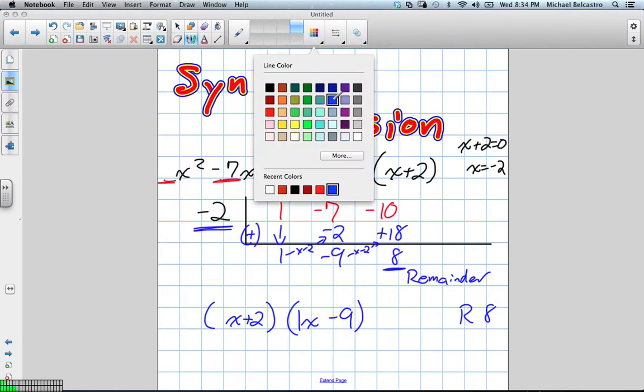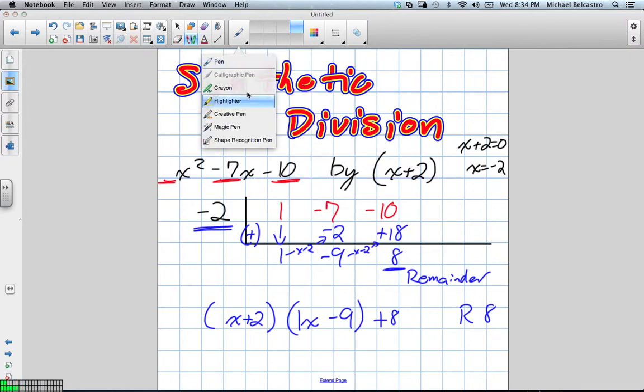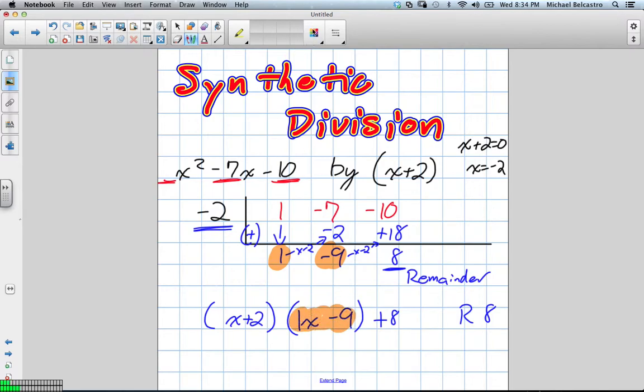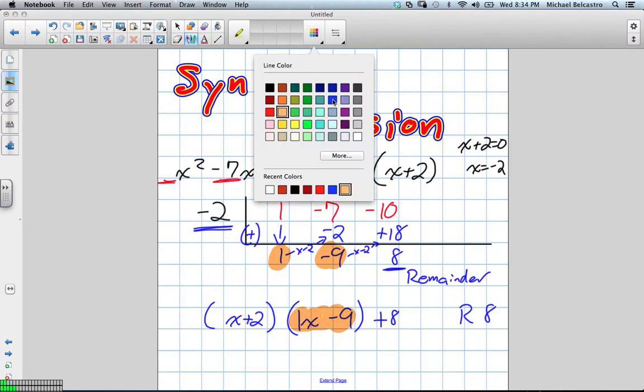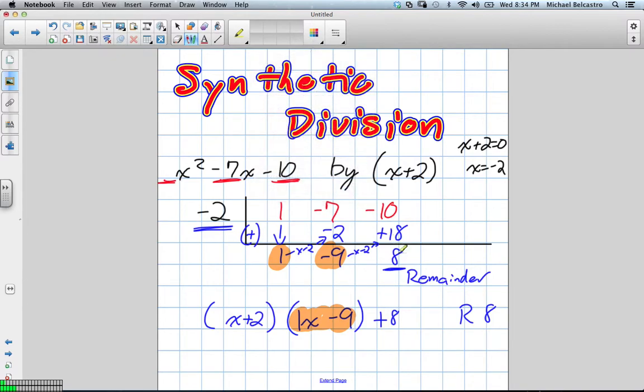So, what was important here... Let me highlight this. What was important is these values here, 1 and negative 9, are essentially what go inside this bracket. And the 8 is our remainder at the end. So, these terms we find at the bottom of the synthetic division are what go into this bracket.